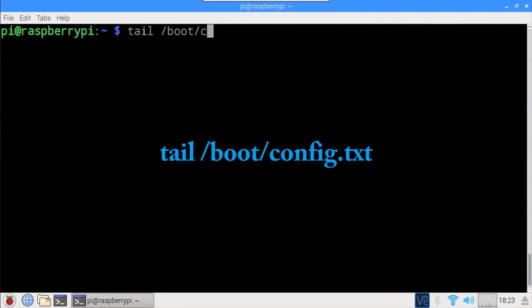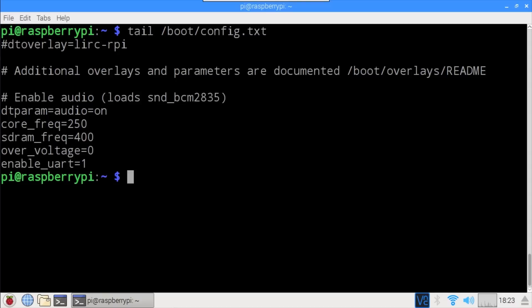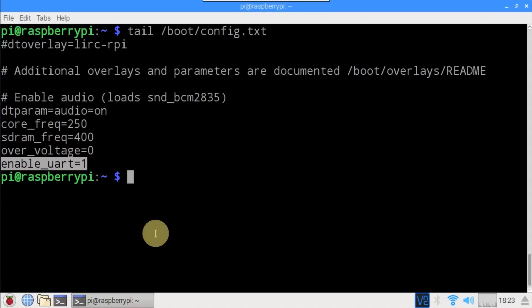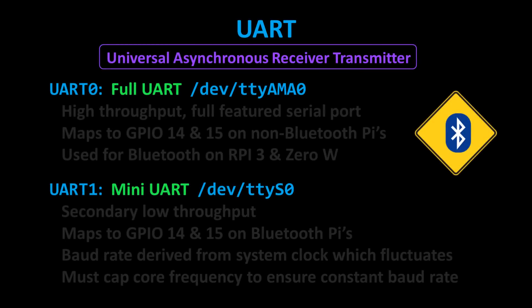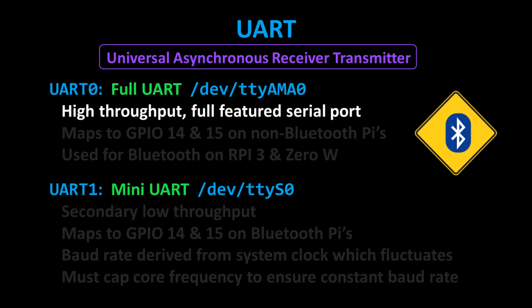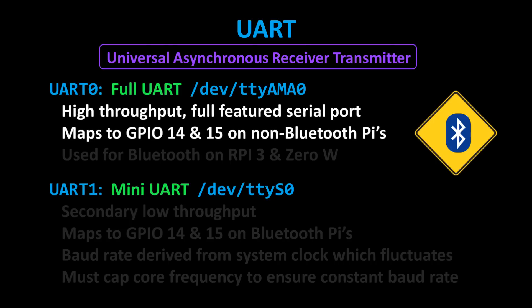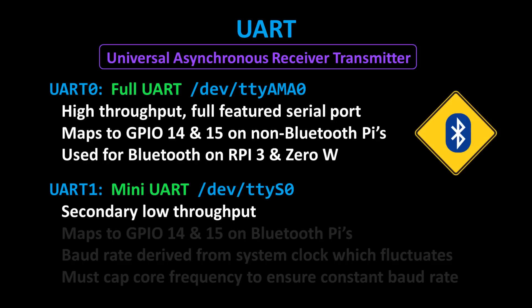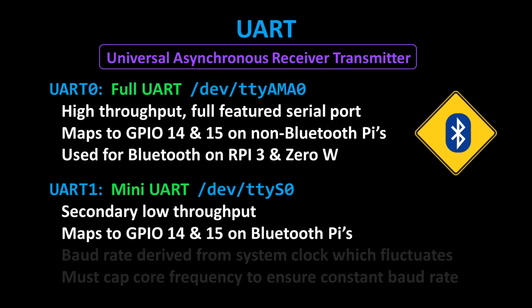After rebooting, verify the serial interface with: tail /boot/config.txt. The file should contain the uncommented line enable_uart=1. Please note that this line could have performance issues on a Raspberry Pi with Bluetooth, such as the Pi 3. The Pi has two UARTs, which stand for universal asynchronous receiver-transmitter. The first is UART0 on port /dev/ttyAMA0 — it's a high-throughput full-featured serial port, mapped to GPIO pins 14 and 15 on non-Bluetooth Pis. However, on the Raspberry Pi 3 and 0W, it's appropriated for Bluetooth. The second, UART1 on port /dev/ttyS0, is called the mini UART and is only for low-throughput applications.